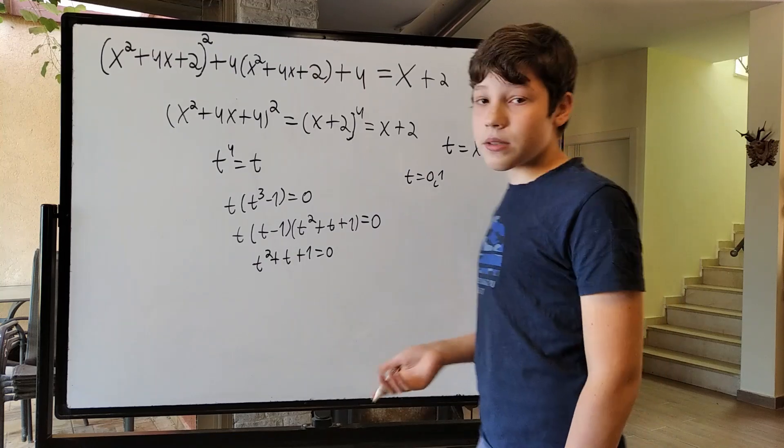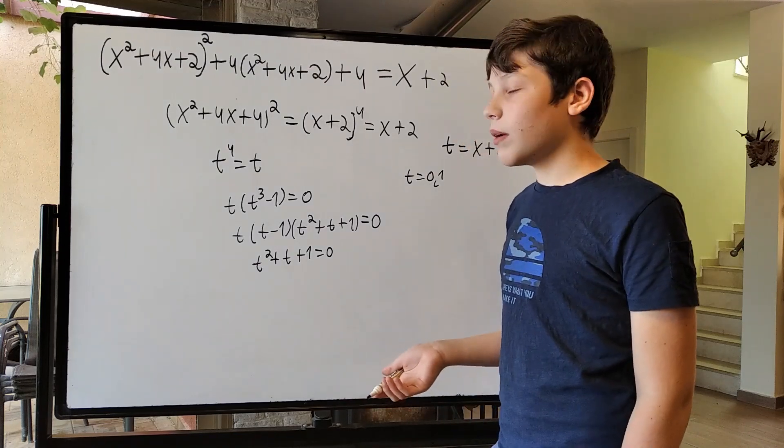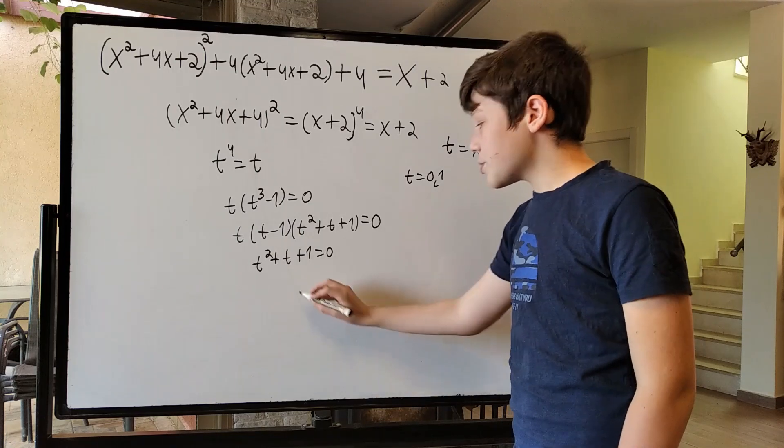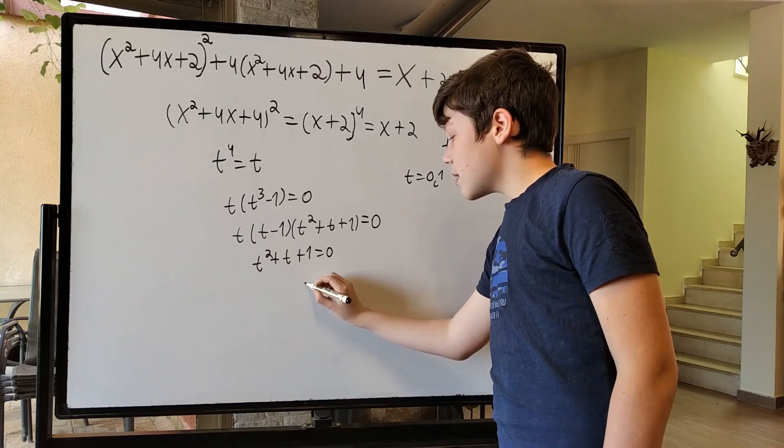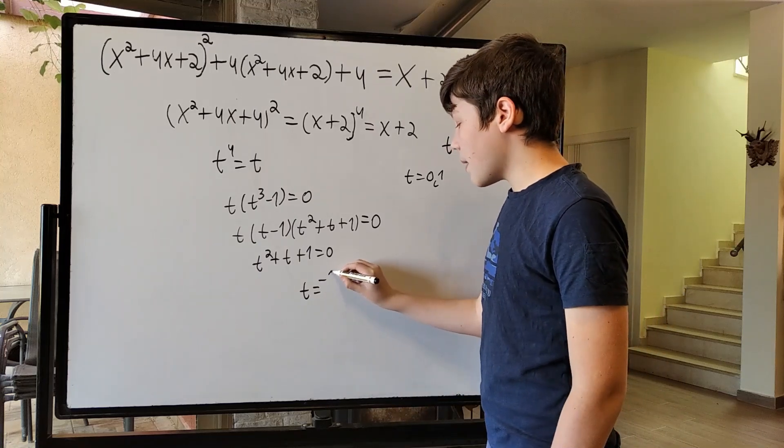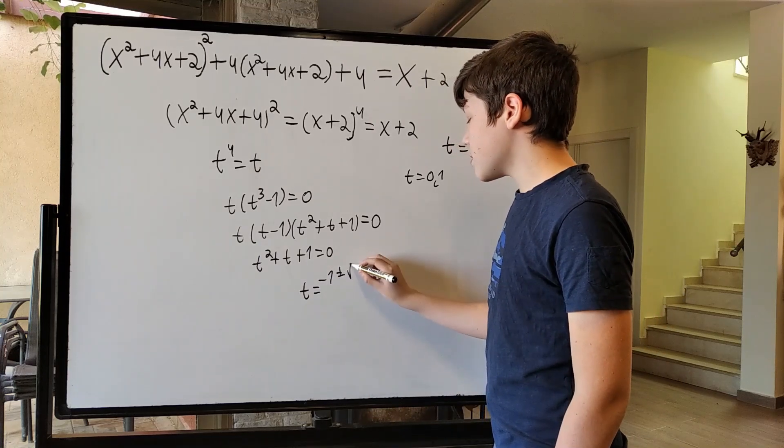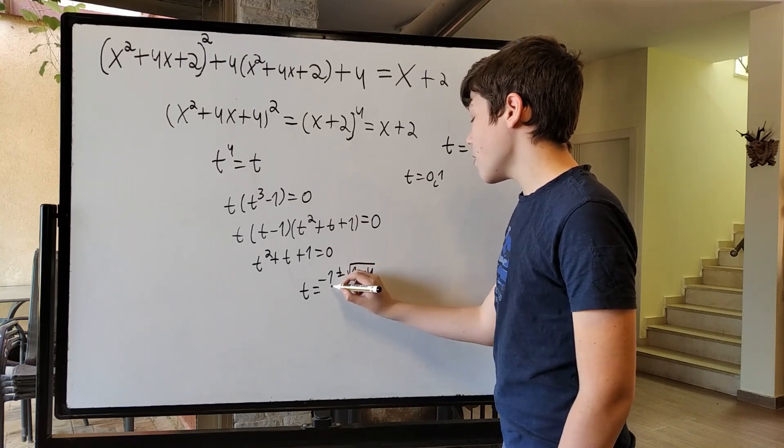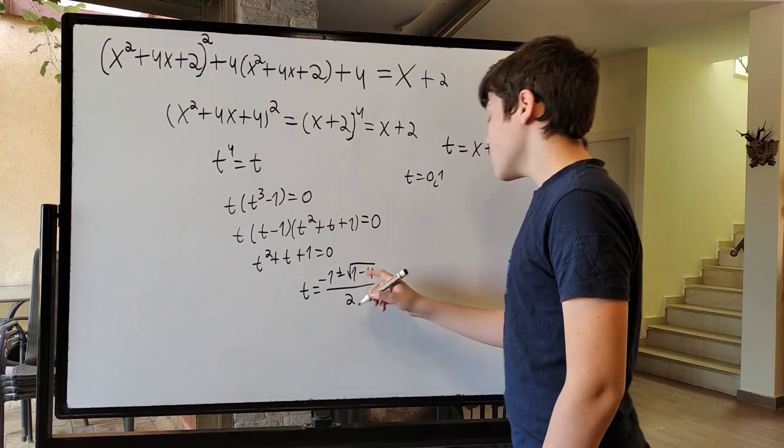Now, this is actually not quite hard. We just use the quadratic formula. So, what we get is minus 1 plus minus the square root of 1 minus 4, all divided by 2.